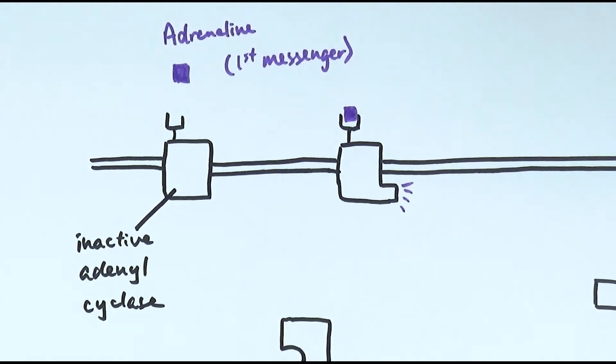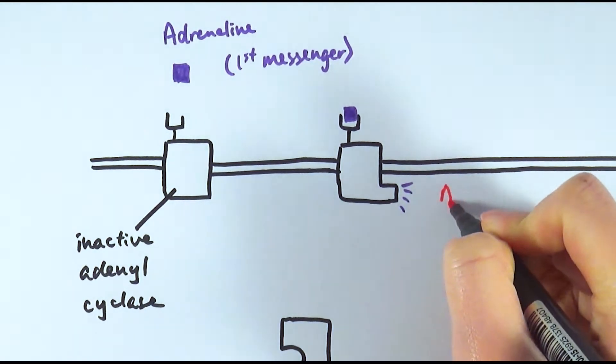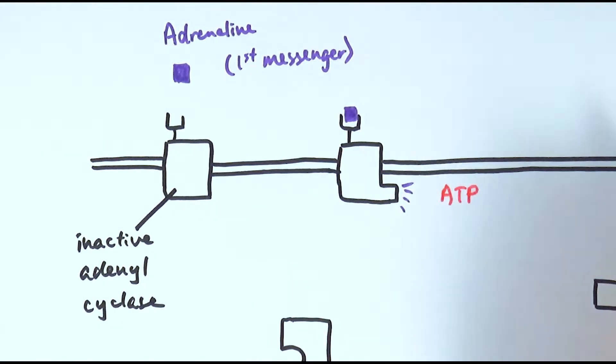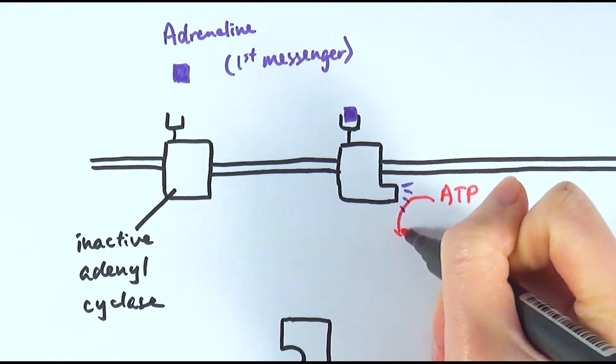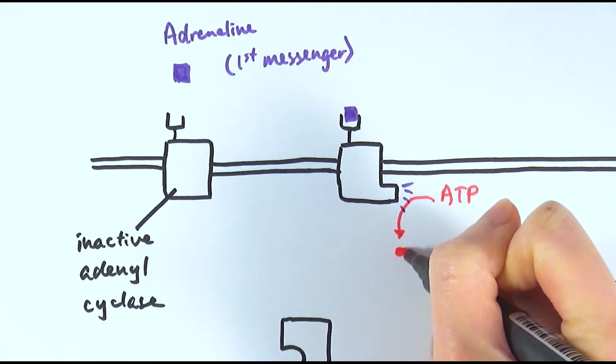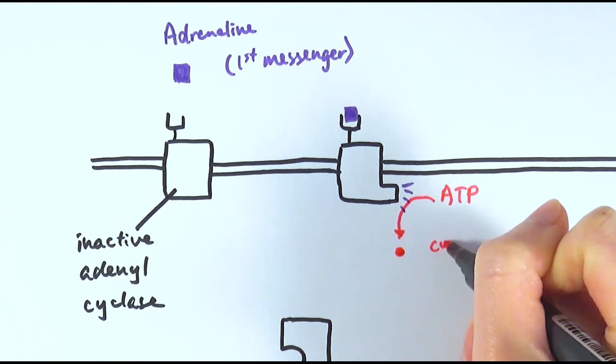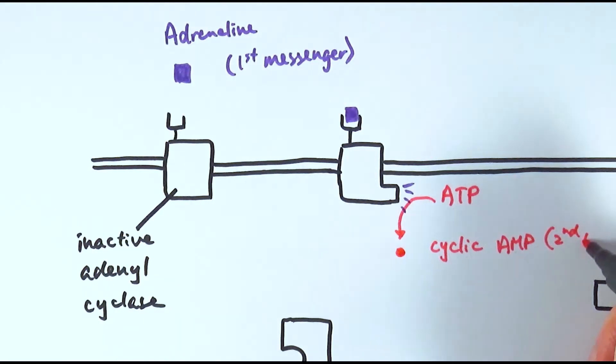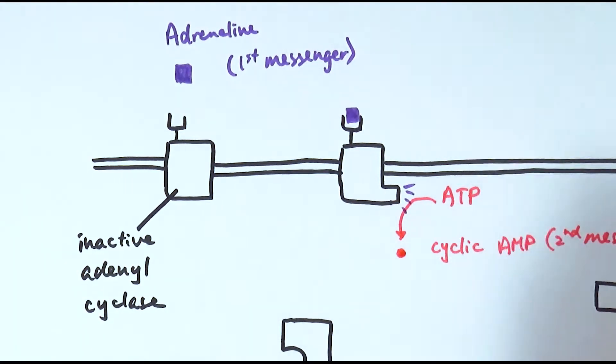As the name implies it's an adenyl cyclase, and the function of adenyl cyclase is that it will turn ATP into a different molecule which is called cyclic AMP, and this is what we call a second messenger because it is the messenger inside the cell that could transfer that message from adrenaline.